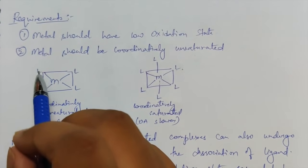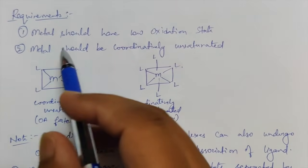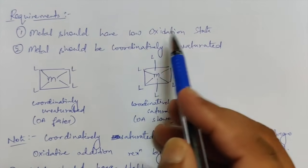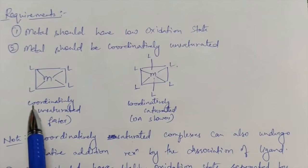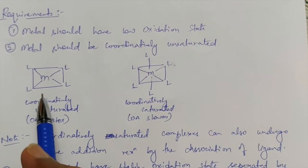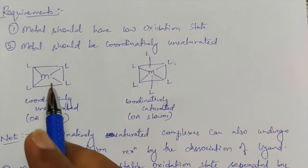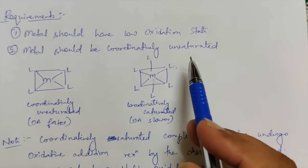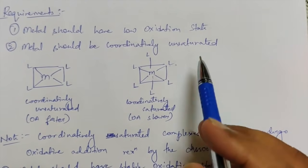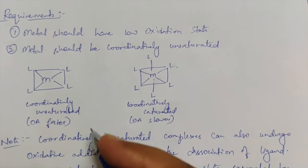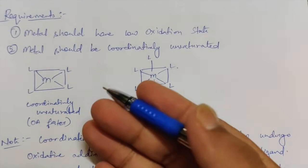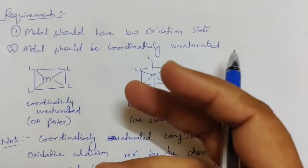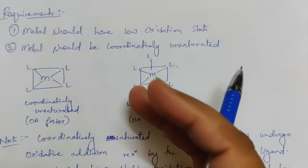What are the requirements for a complex to undergo oxidative addition? The first requirement is that the metal should have a low oxidation state — either plus one, plus two, or zero. The second point is that the metal should be coordinatively unsaturated, meaning it should have room for other ligands to join into it — it should be less crowded.